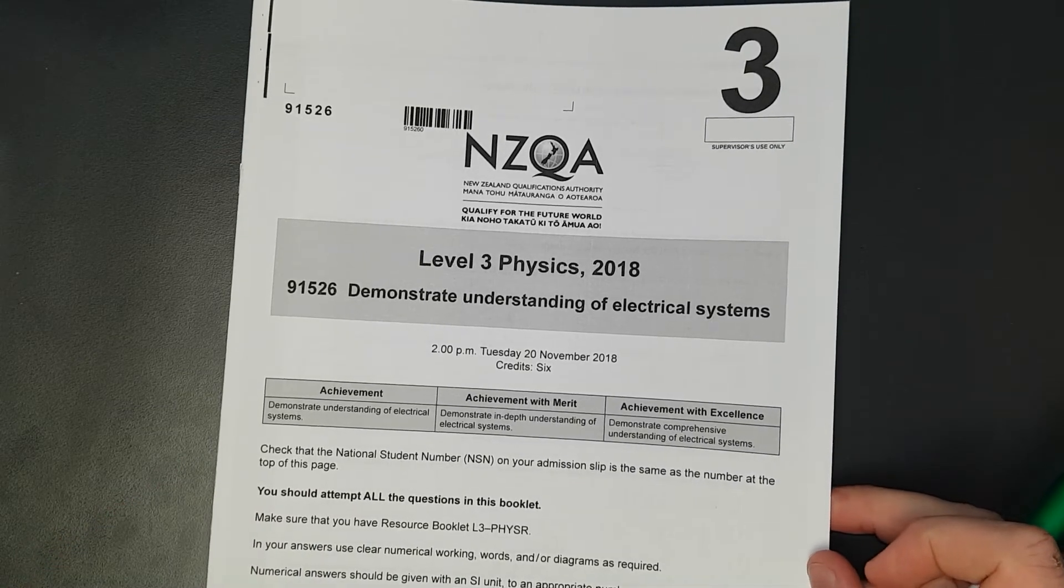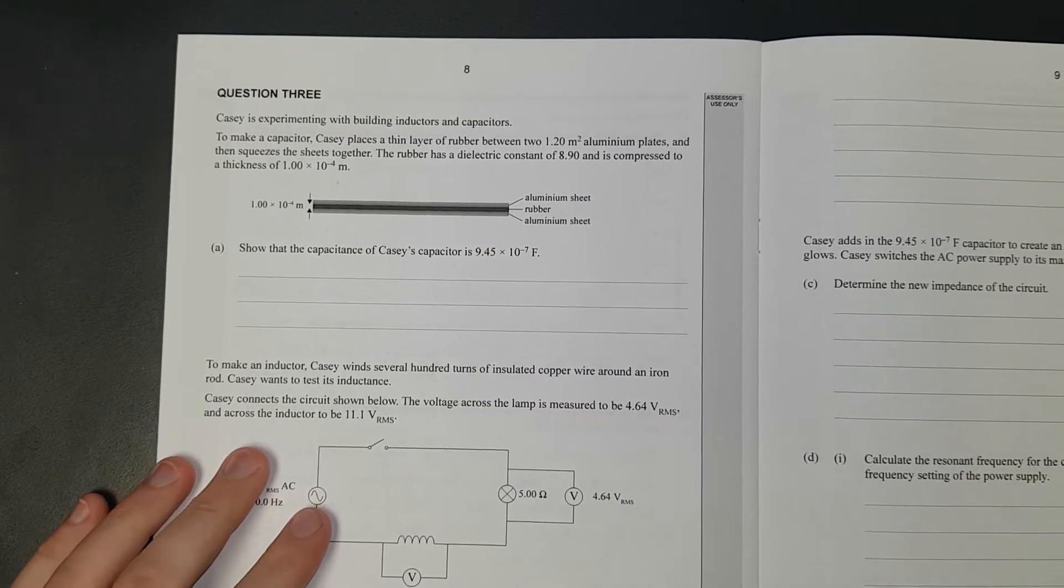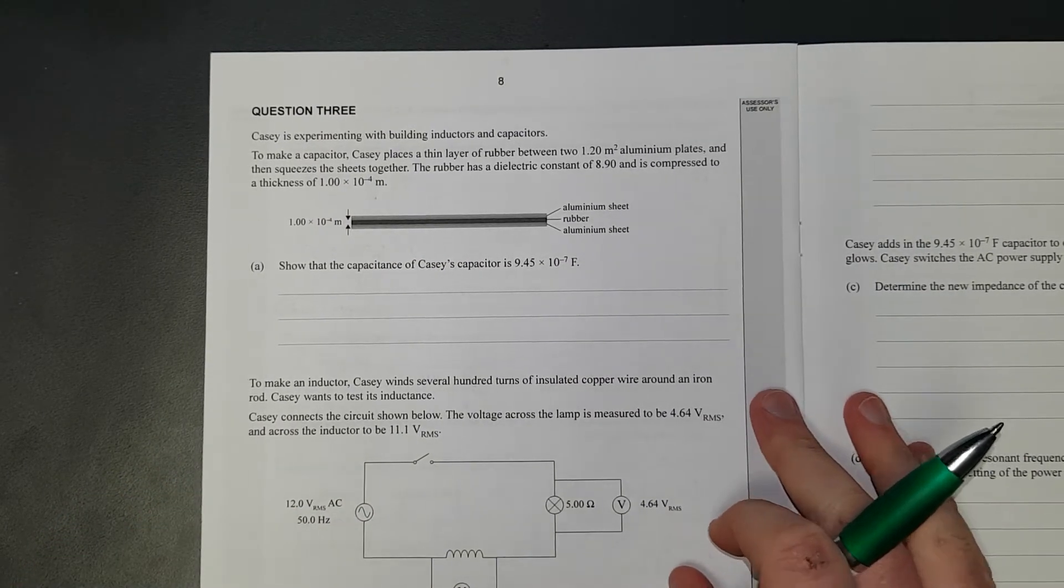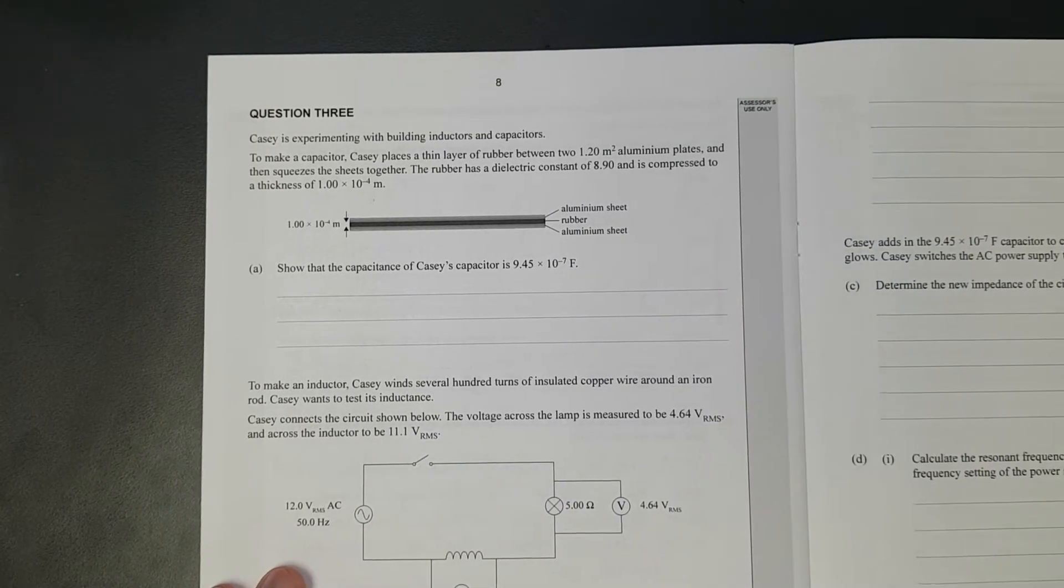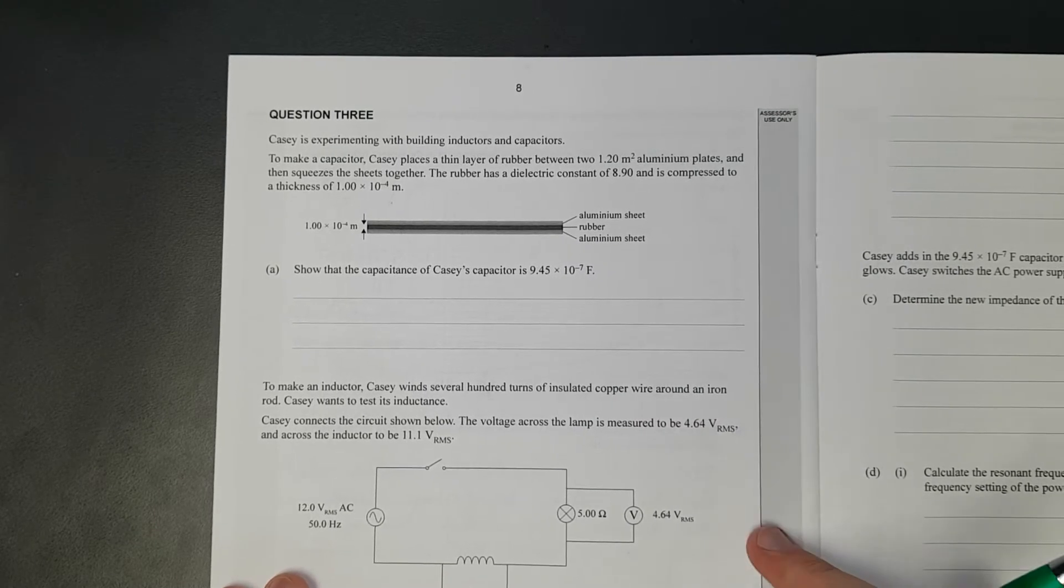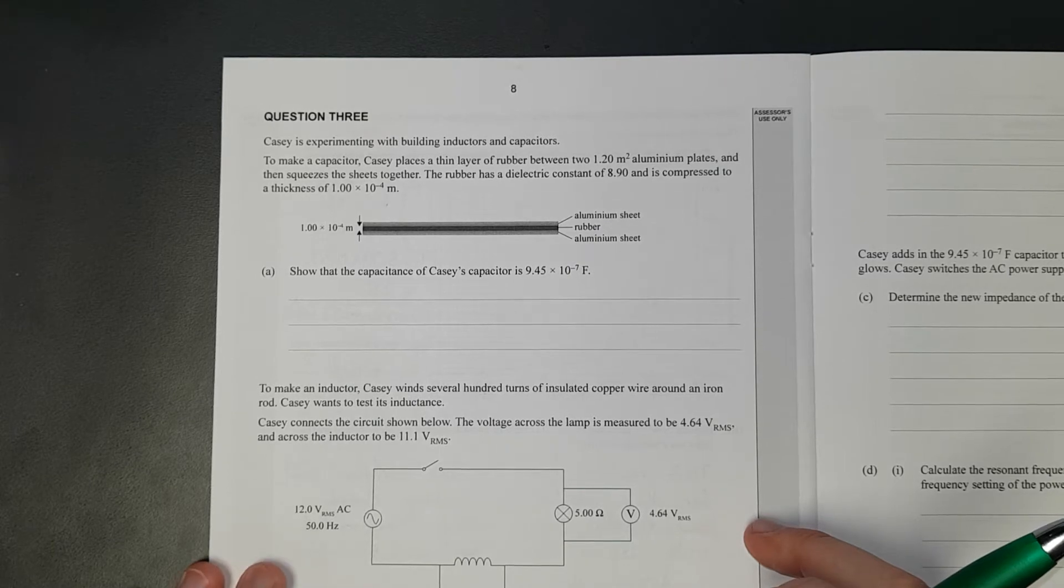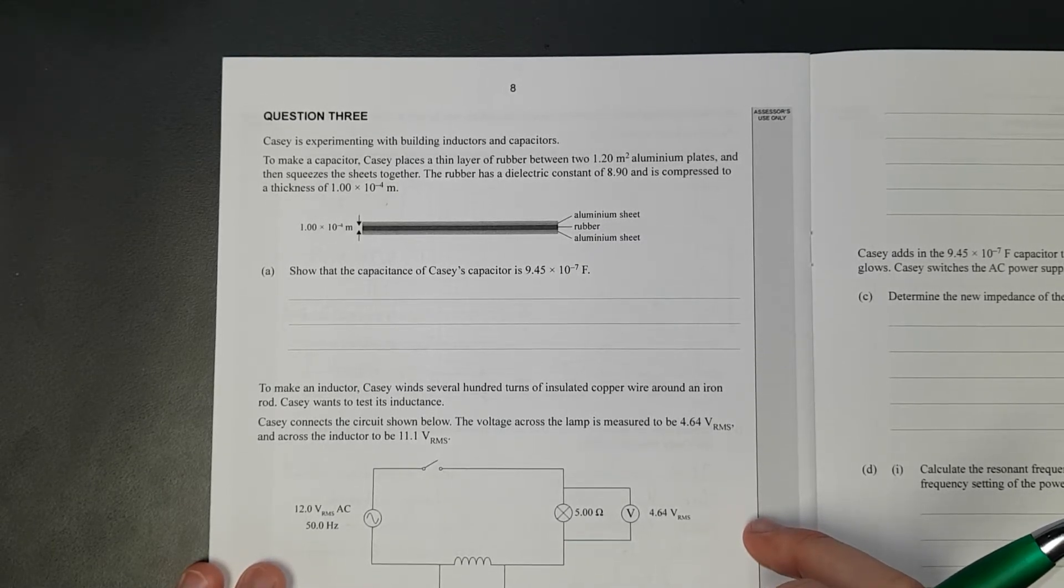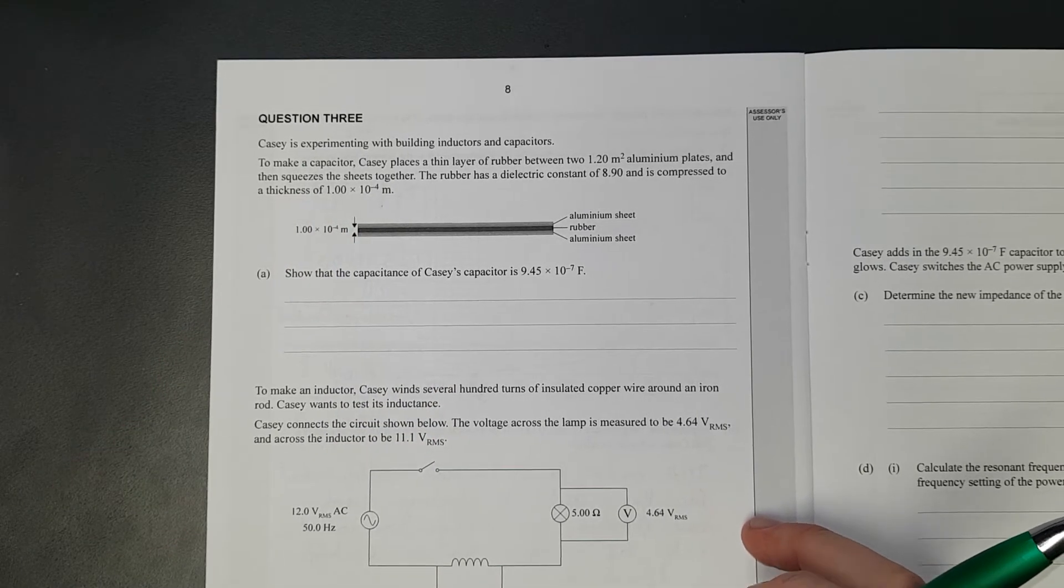This video I'll be working through question 3 of the level 3 2018 electricity exam. Casey is experimenting with building inductors and capacitors. To make a capacitor, Casey places a thin layer of rubber between two 1.2 meter squared aluminum plates and squeezes the sheets together. The rubber has a dielectric constant of 8.9 compressed to a thickness of 1.1 times 10 to the negative 4.